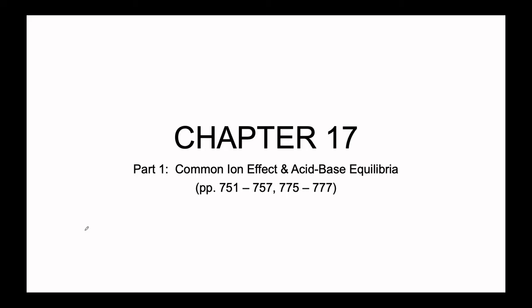Chapter 17 we are now returning to. We previously dipped our toes into chapter 17 when we were talking about the solubility product and the partially soluble nature of mostly insoluble compounds. The reason we jumped into chapter 17 is that section always felt like an odd component, since the rest of chapter 17 is all about acid and base equilibria. We are looping back to the beginning of chapter 17 to talk about the common ion effect as it pertains to acid-base equilibria.